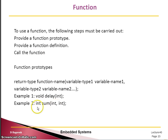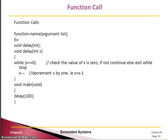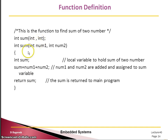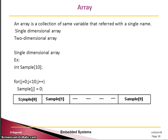Here is the function prototype: the function returns an integer, the name is 'sum', and it takes two integer inputs. Then there is the function definition where we return the computed sum. Another example is a delay function — in the main program we call delay(100), passing 100 as the argument, and the function works with that value as x. So there is a function prototype, a function definition, and a function call. We will discuss the concept of arrays in our next video.